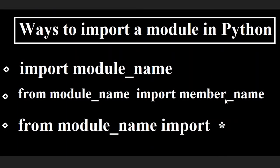Let us now see the types or the ways in which you can import different modules. The first one is by writing the import statement followed by the module name. The second one is you write the from keyword followed by the module name, then import followed by the method or member name. The third one uses the from keyword, the module name, and then import followed by an asterisk, which imports everything inside that particular module.